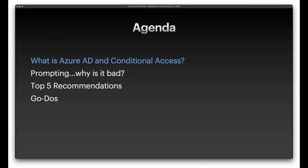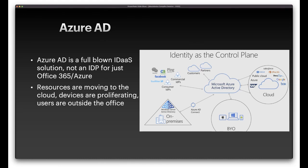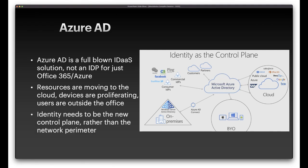First, we'll talk about what Azure AD and conditional access are. If you have Office 365 or Azure, you have Azure AD. Azure AD is not just an identity provider for those two services — it's a full blown identity access management solution. A trend greatly accelerated by COVID was people wanting to work outside the office, accessing cloud services and SaaS apps from corporate devices, phones, and personal iPads. That traditional network perimeter has drifted away, and identity has become the new perimeter.